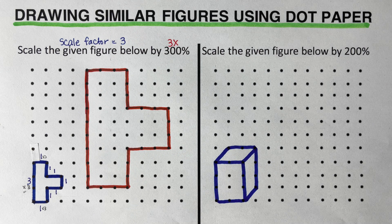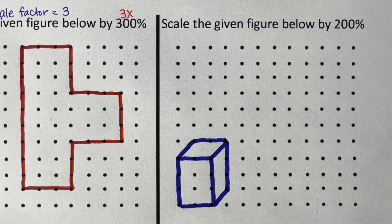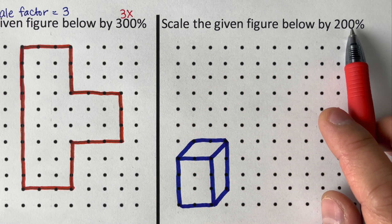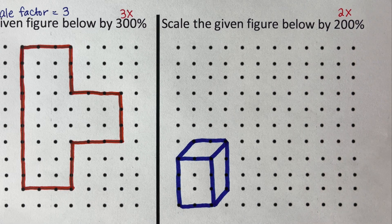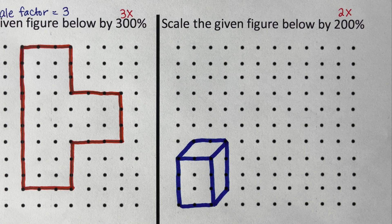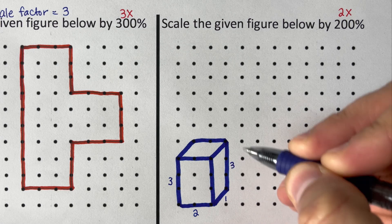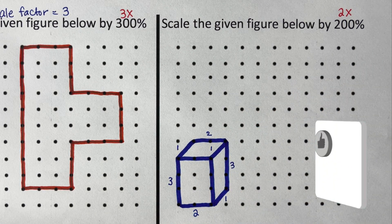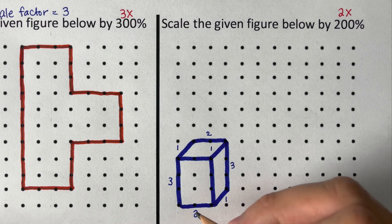Now let's move on to the next example. I would encourage you to pause this video and try this problem on your own, then unpause and check your answer. The problem says to scale the given figure below by 200. If we say 200, this means we draw a bigger picture that is two times bigger than the original — 200 means twice bigger, 300 means three times bigger, 400 is four times bigger. Before we draw the bigger picture, let's label the lengths of the sides first, then multiply two to each of these.